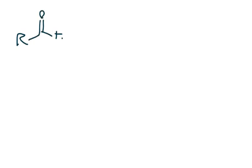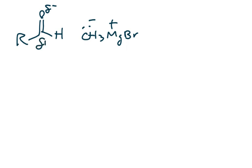We're going to start simple with an aldehyde — what happens when we react it with methylmagnesium bromide? The Grignard carbon has a minus charge and the carbonyl carbon is partial positive. These organometallic reagents are strong nucleophiles, so they always do SN2-like reactions, meaning everything happens all at once. The nucleophile is going to come in and attack that partial positive carbonyl carbon, and we need a leaving group.